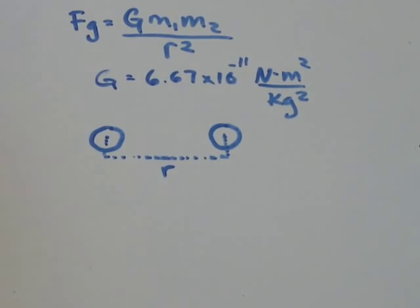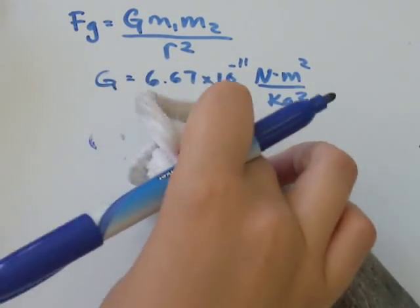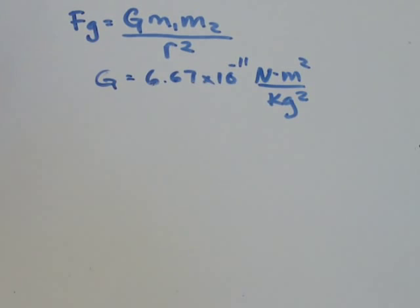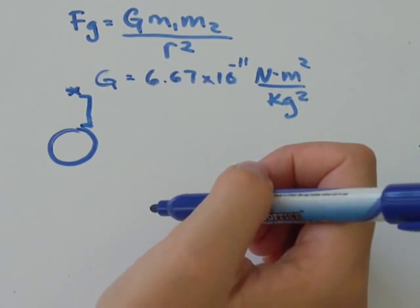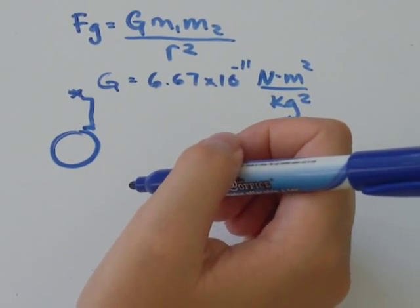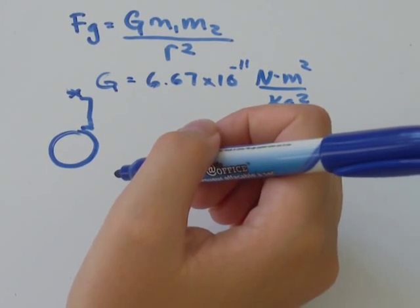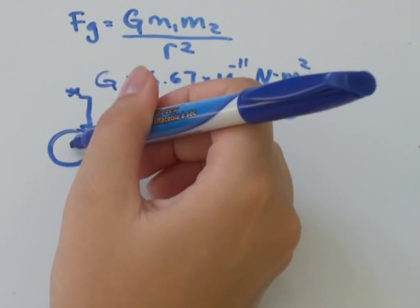So R, you might have to think about it a little bit. Because like in the question we're going to do, we're told the distance an object is above Earth. So we're told this distance. But that distance is not the distance between the center of the masses. The center of the Earth is down here.